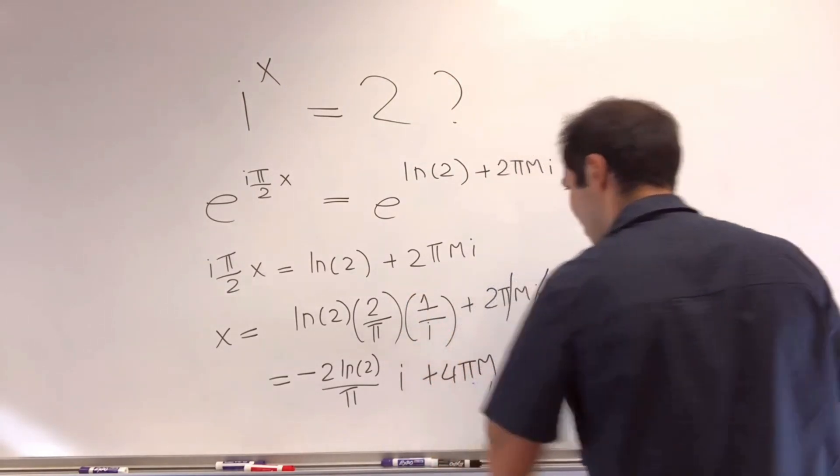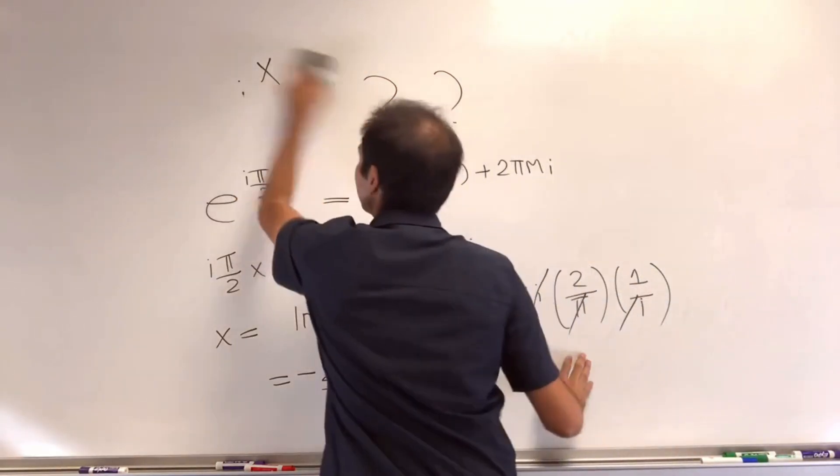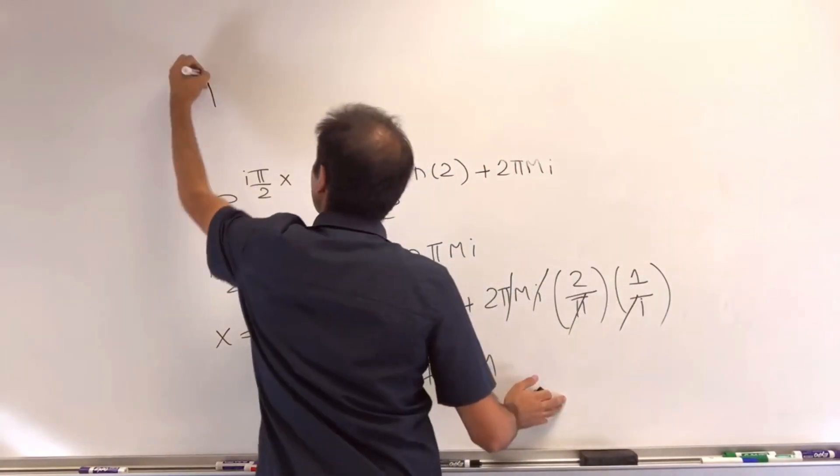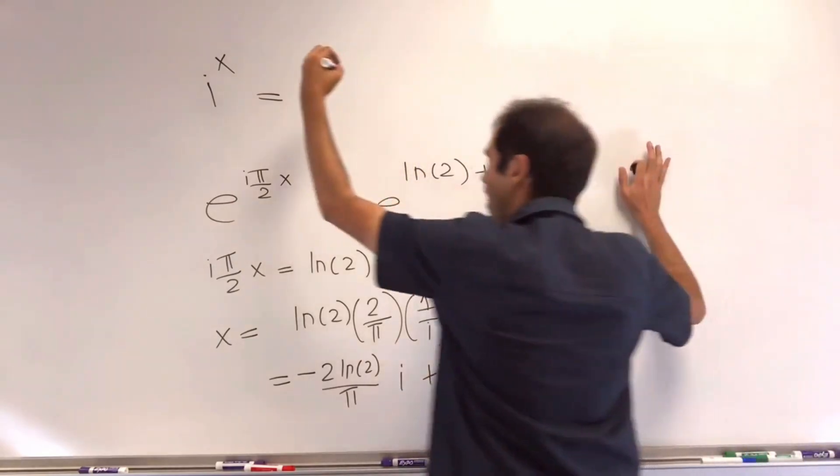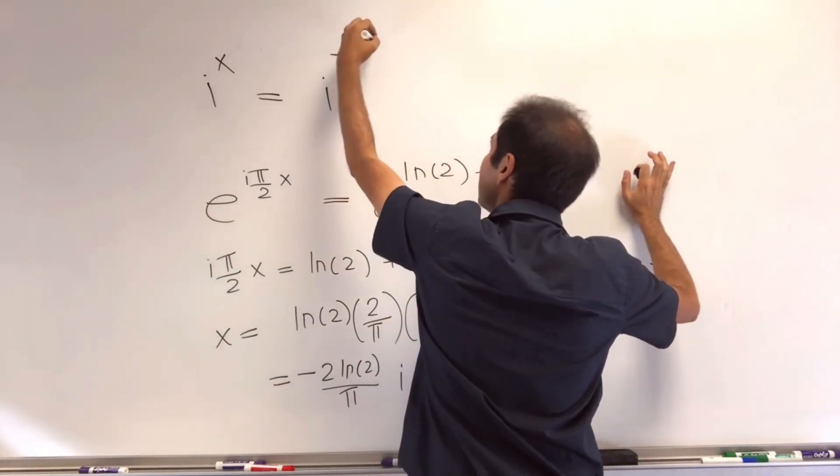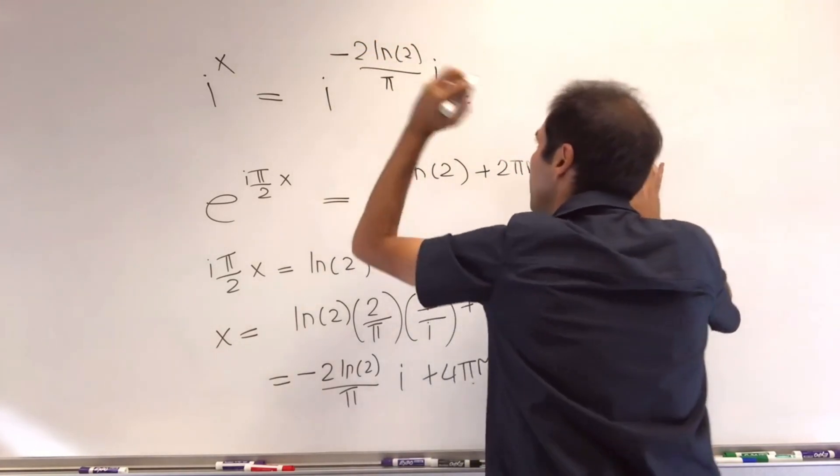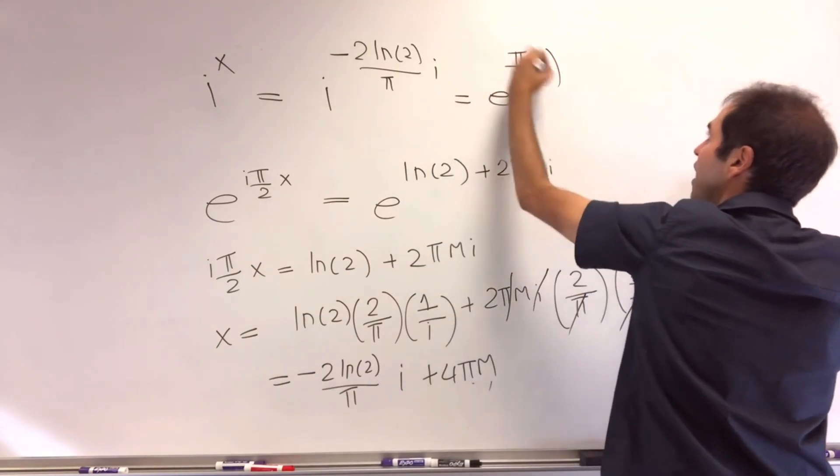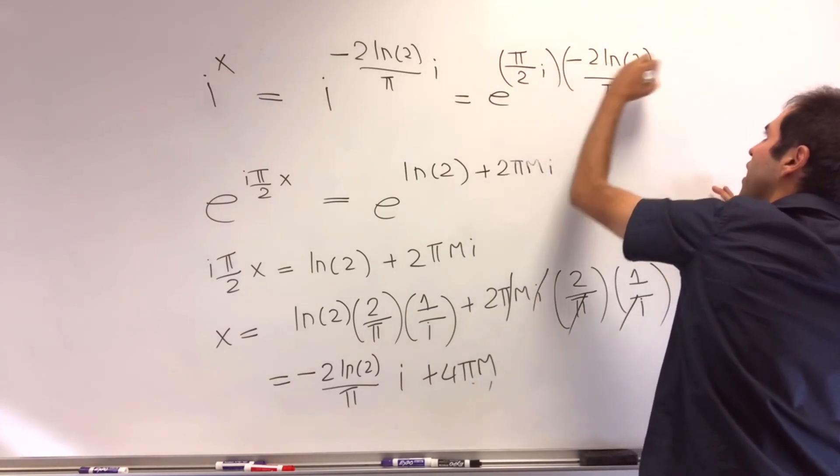And again let's just check that this works. So then i to the x, and again let's just focus on this part. So that's i to the minus 2 ln of 2 over pi i, and again that's e to the pi over 2i times minus 2 ln of 2 over pi i.